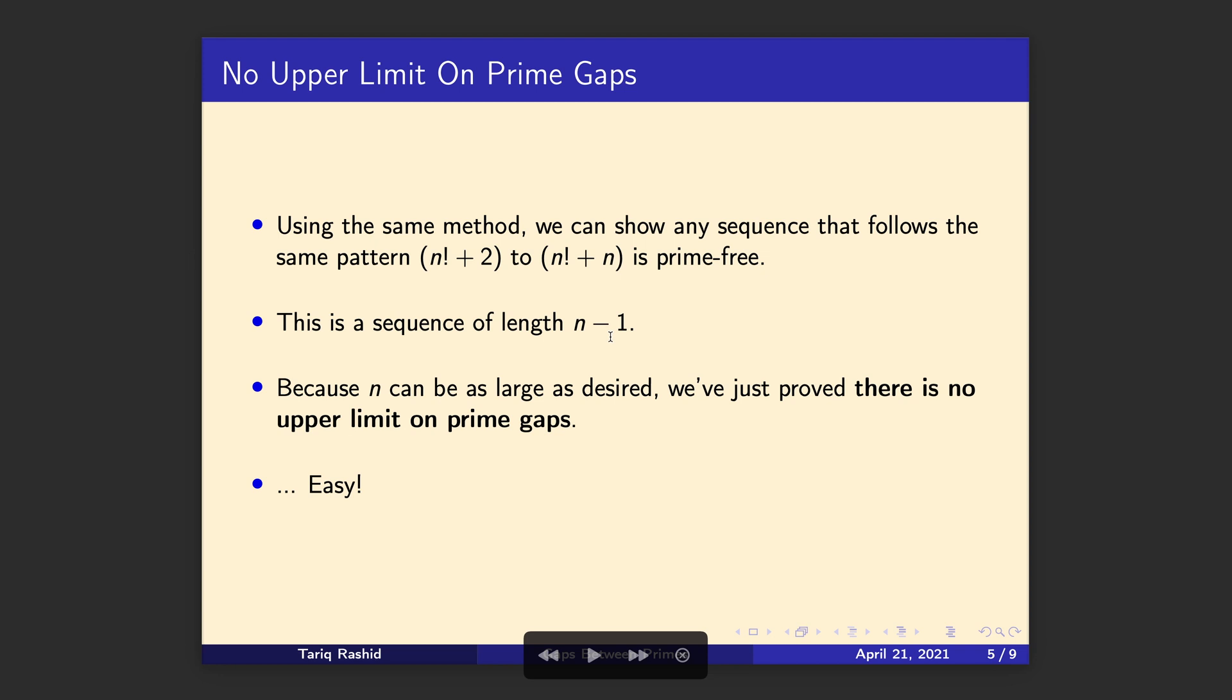And this means that there's no limit on the sequence that is prime-free. So actually, without even thinking too hard about it, we've proved that there is no upper limit on prime gaps. So that was really easy. We almost didn't realise we'd proved it until we'd already proved it. So that's a really nice, easy proof.